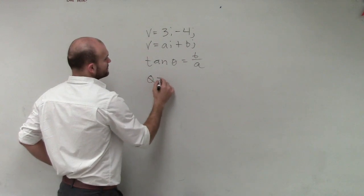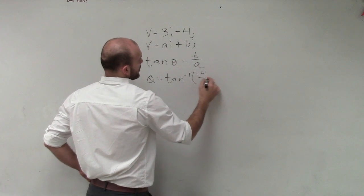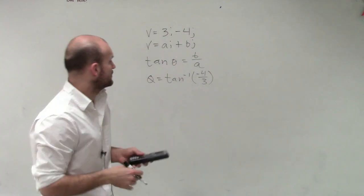So in this case, we can say theta equals tan inverse of negative 4 over 3. Now, I will have to use my nice little handy calculadora for this.